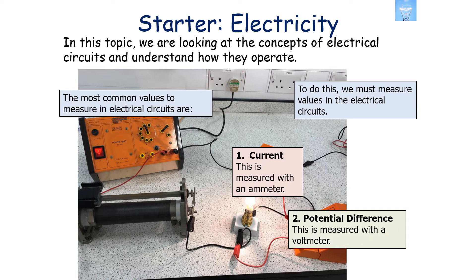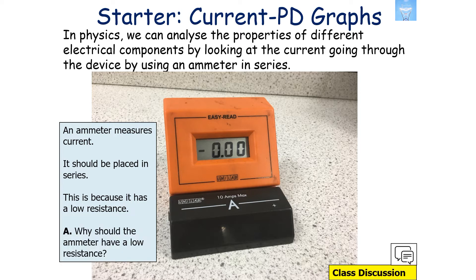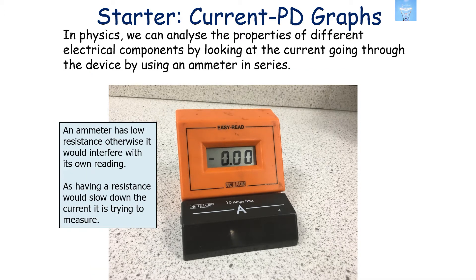When we look at these values, we can measure them with ammeters and voltmeters respectively. In physics we use an ammeter to measure current, and it should be placed in series because it has a low resistance. An ammeter has a low resistance, otherwise it would interfere with its own readings — because having a resistance would slow down the current it's trying to measure.